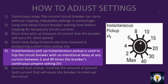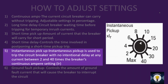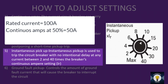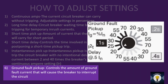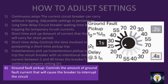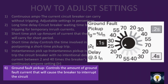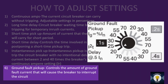Instantaneous pickup is used to trip the circuit breaker with no intentional delay at any current between 2 to 40 times the breaker's continuous amp setting. For example, if continuous amps is 50 A and the instantaneous pickup switch is set to 20, then above 1000 A the breaker will trip instantaneously without any time delay. Ground fault pickup is the amount of fault current that will cause the breaker to interrupt the circuit. The knob is available from 20% to 70% of the rated current IN. If the knob is at 20%, any ground fault current exceeding 20% of IN will trip the breaker instantaneously.